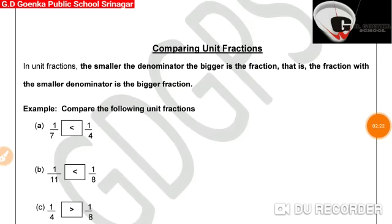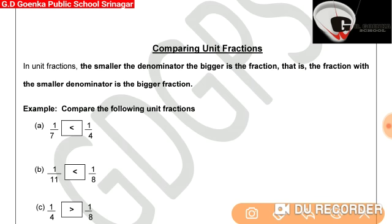Now we will compare unit fractions. We know that fractions with 1 as their numerator are called unit fractions. In order to compare them, we compare their denominators. The smaller the denominator, the bigger the fraction.